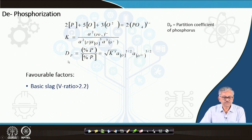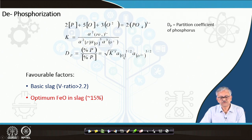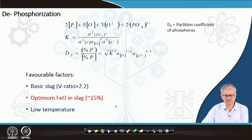The favorable conditions for dephosphorization include: basic slag (higher basicity increases O²⁻ activity); optimum FeO in the slag (higher oxidation potential); and low temperature — because K is inversely proportional to temperature. At low temperature, K is high, so the partition ratio Dp is high, and dephosphorization is favored.